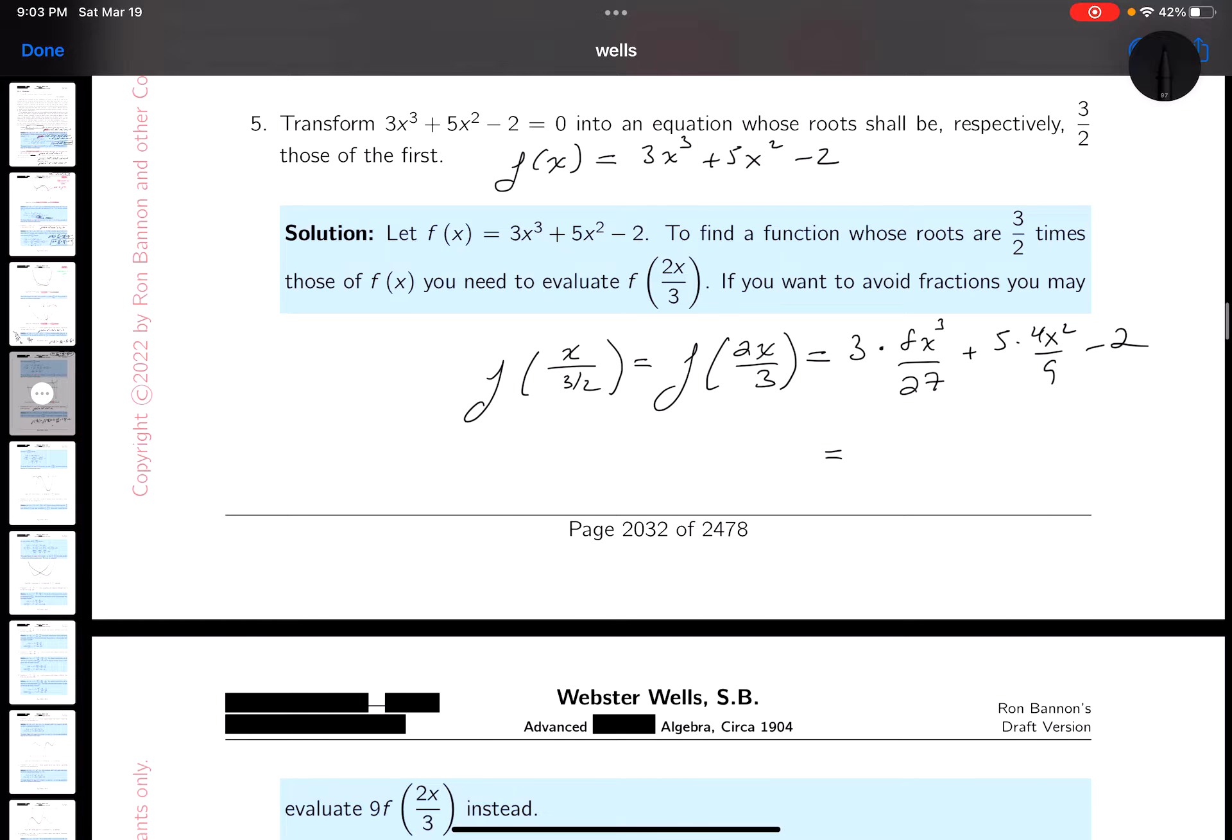What do you get over here? 8x cubed over 9, plus 20x squared over 9, minus 2.